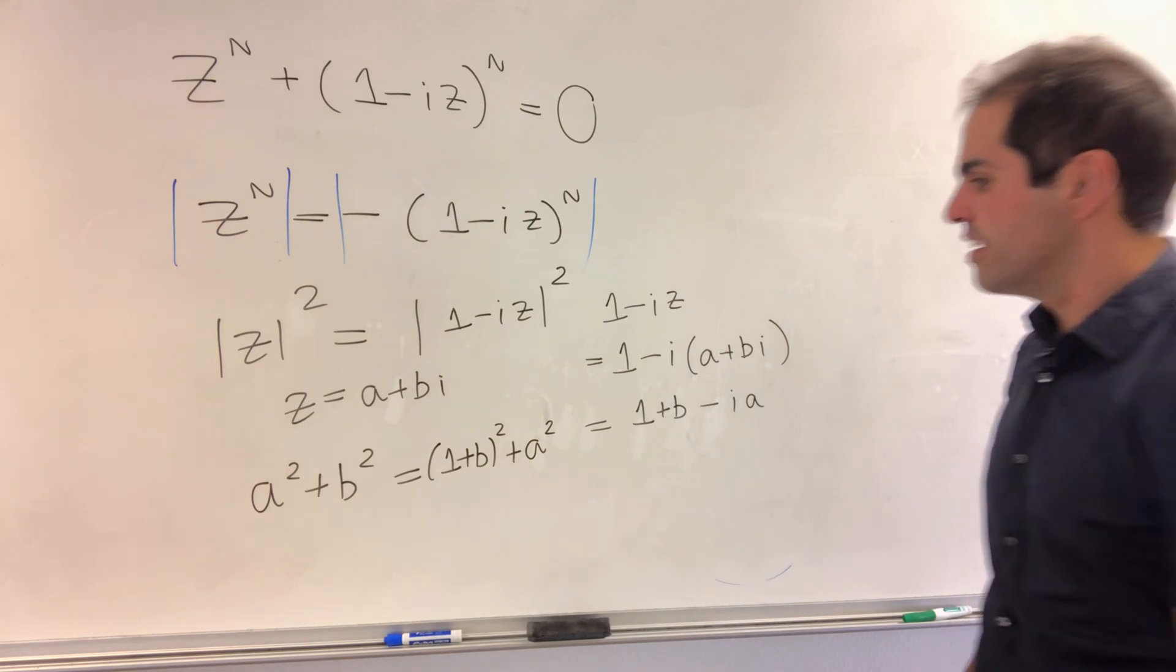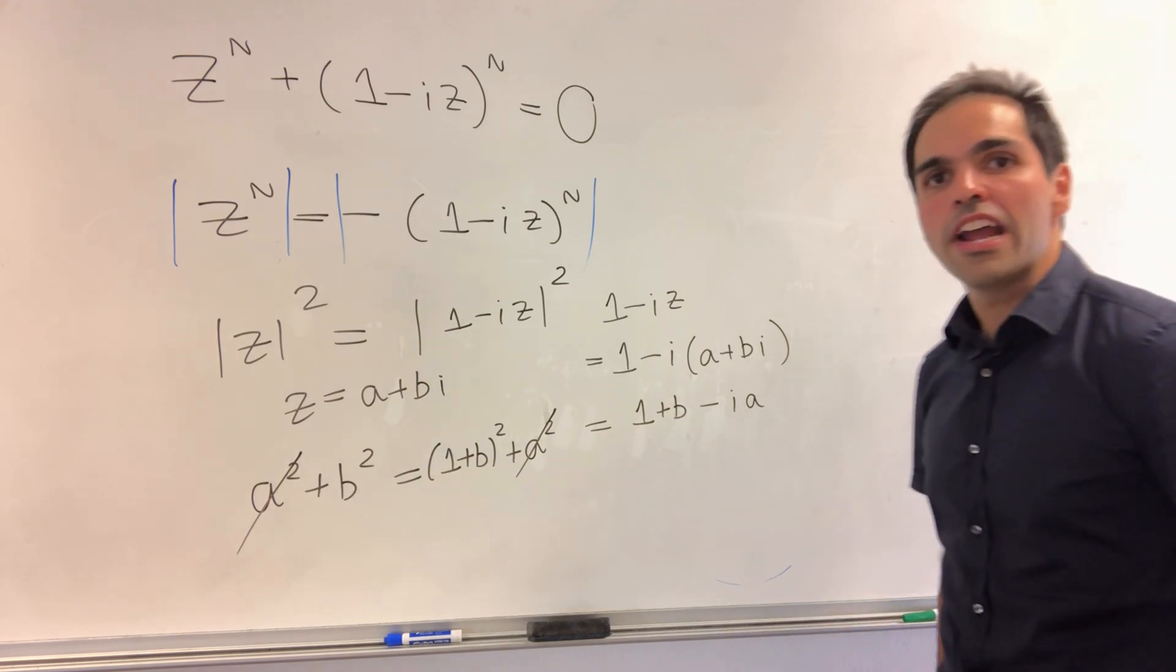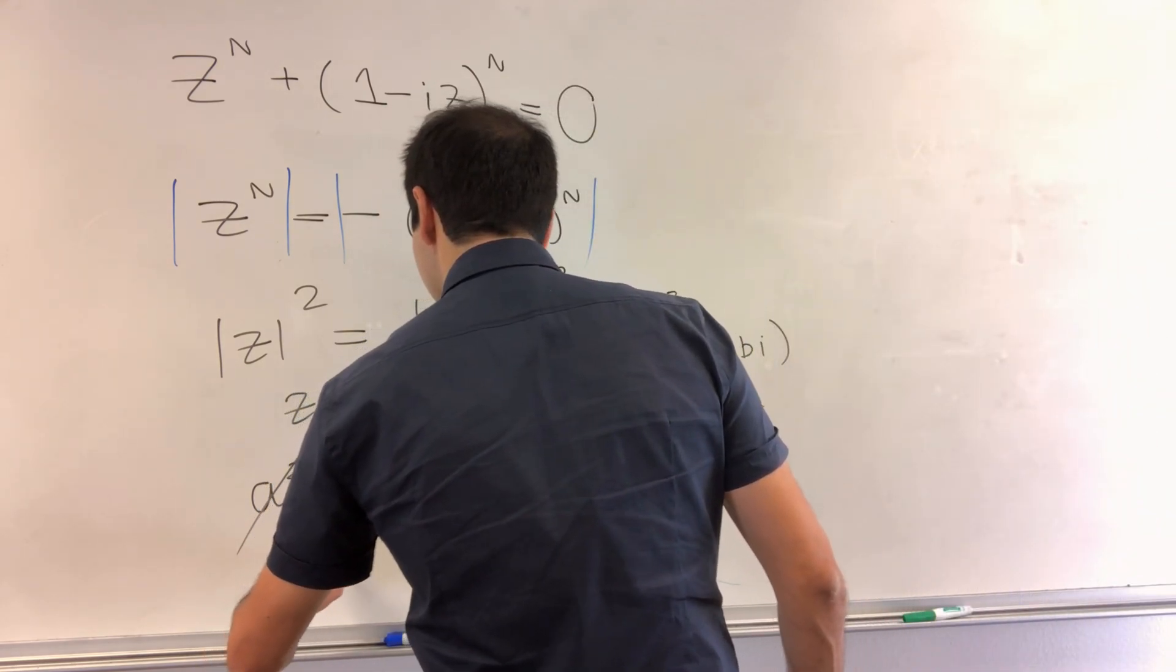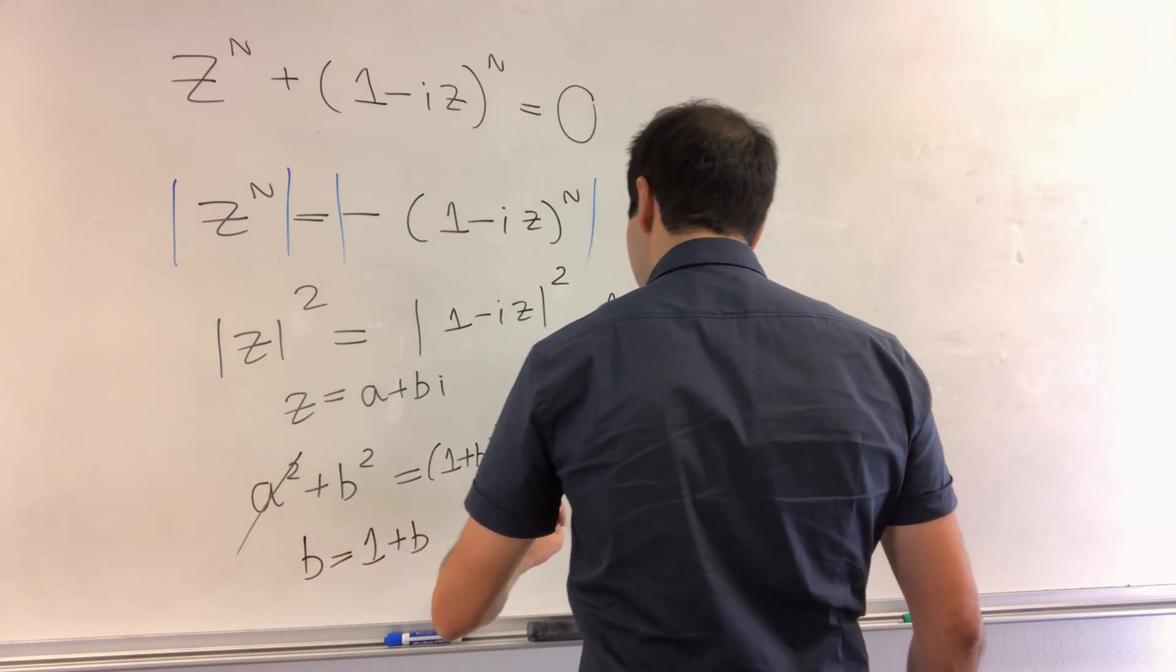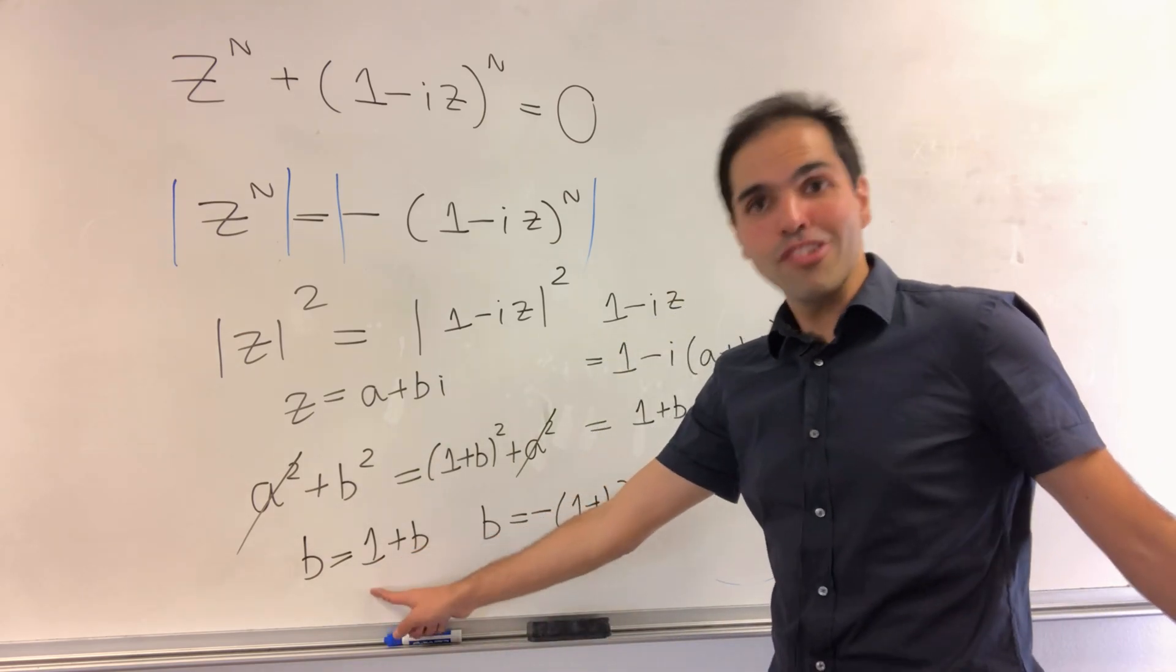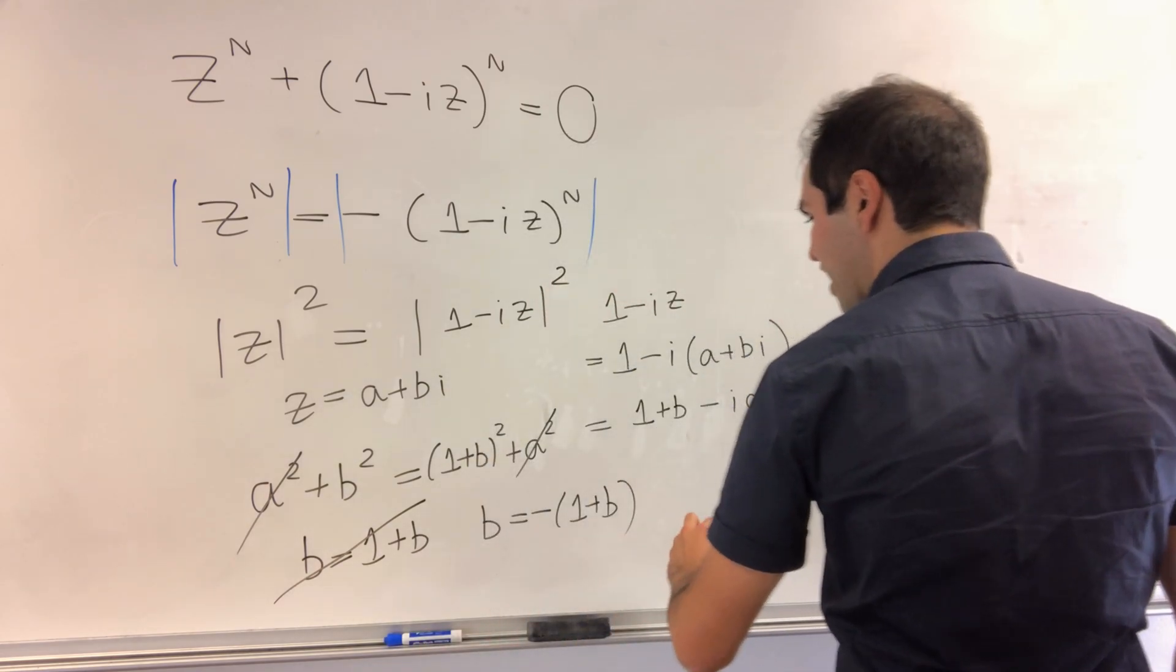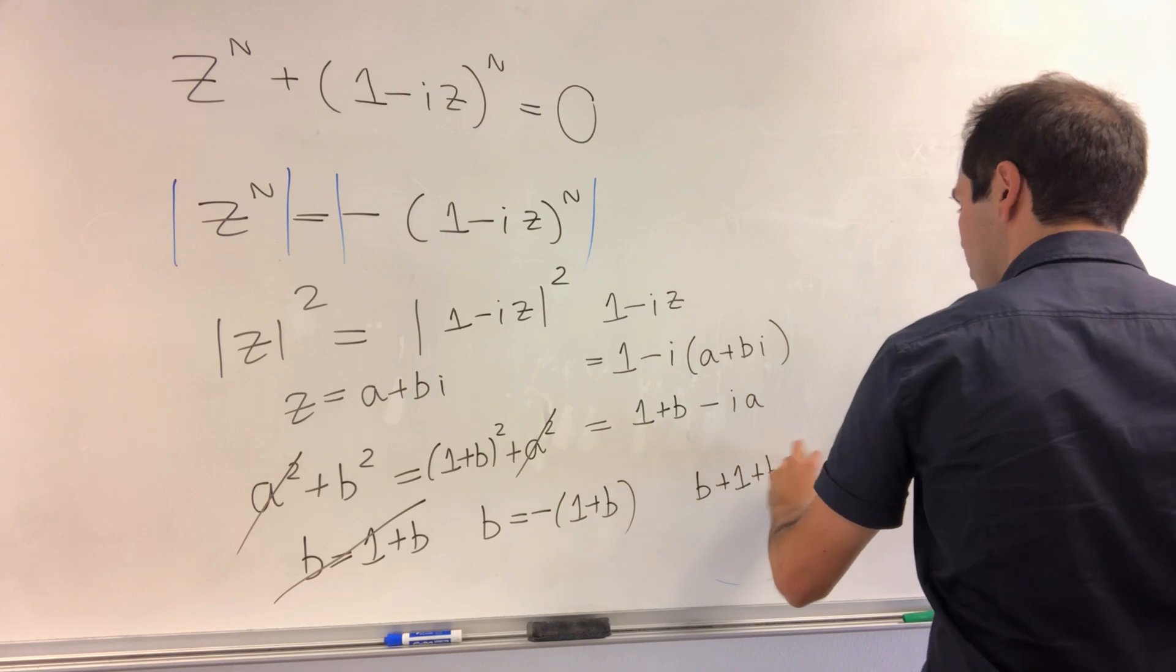The nice thing is, so a squared cancels out. And then what you're left with is b squared equals 1 plus b squared. So either b is 1 plus b or b is minus 1 plus b. This unfortunately doesn't make sense, so we can eliminate this.